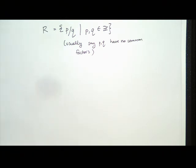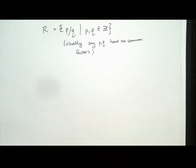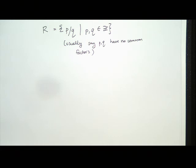Do you know any irrational numbers? E, square root of 2, pi. Has anybody ever proven a number is irrational? A direct proof would require trying all pairs of integers — that would take forever. So we do a proof by contradiction: assume the number is rational and derive a contradiction.